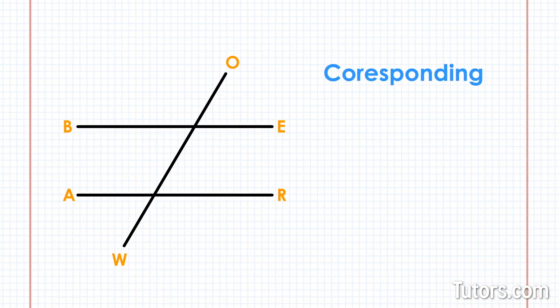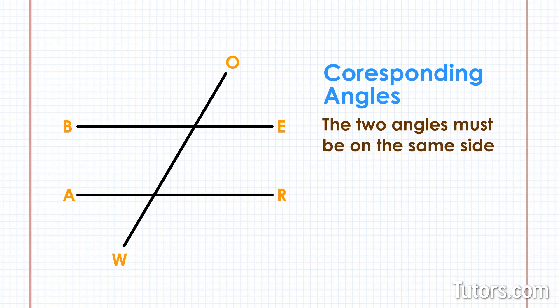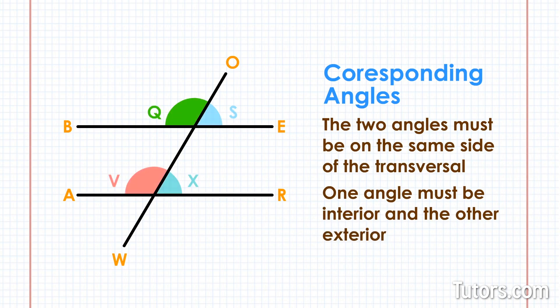The next pairs are called corresponding angles. The two parallel lines are creating corresponding angles. To be corresponding angles, the two angles must be on the same side of the transversal. One angle must be interior and the other exterior. Notice that angle Q is congruent to angle V. Angle Q is an exterior angle on the left side of transversal OW, and angle V is an interior angle on the same side of the transversal line. All the pairs of corresponding angles are angle Q and angle V, angle T and angle Y, angle S and angle X, angle U and angle Z.